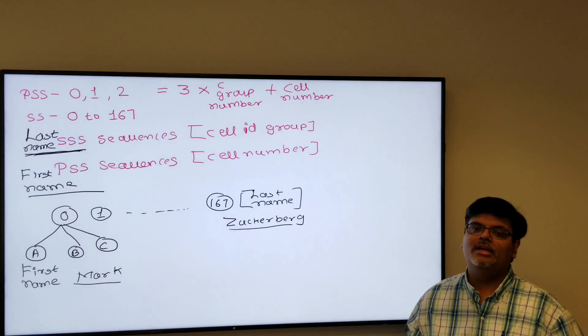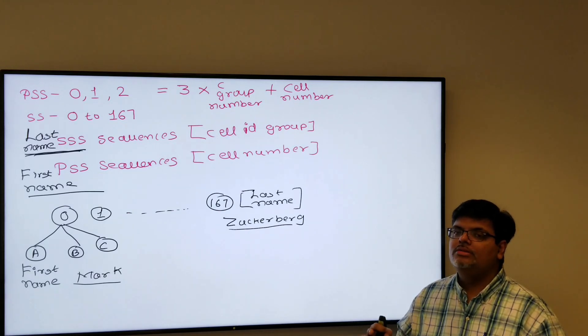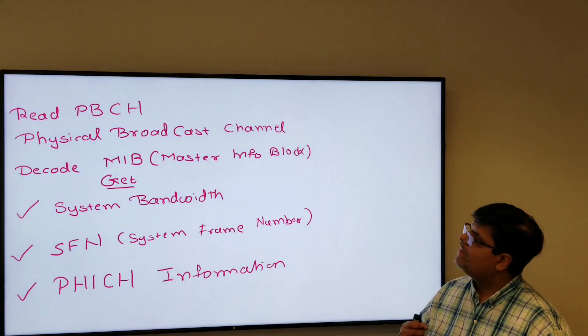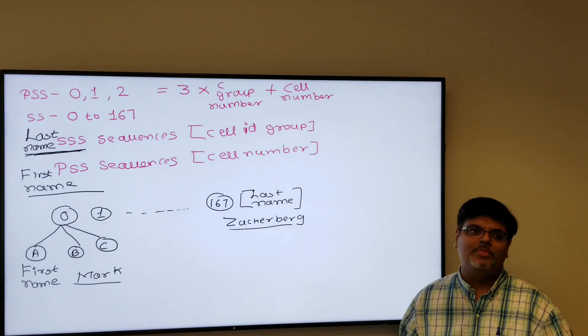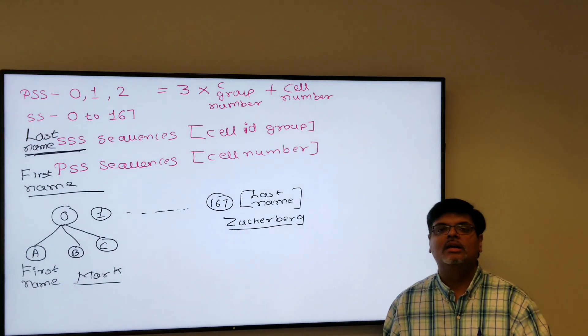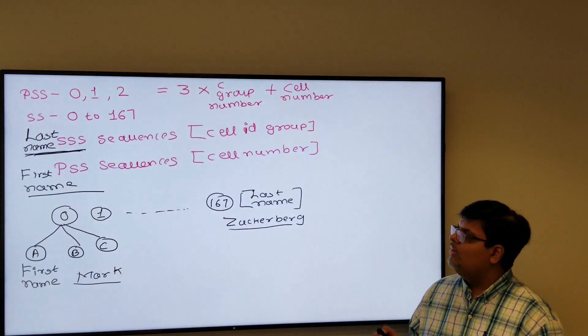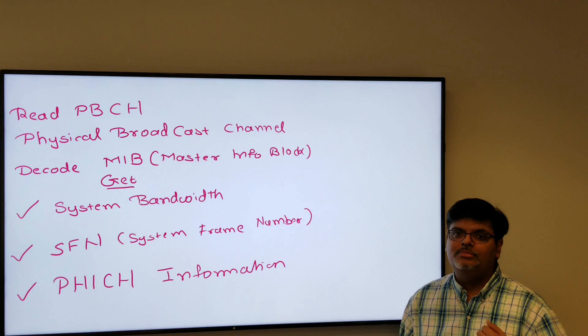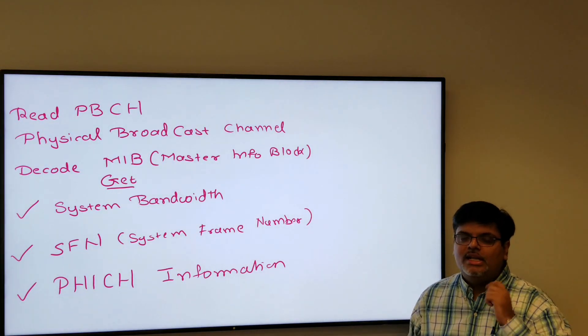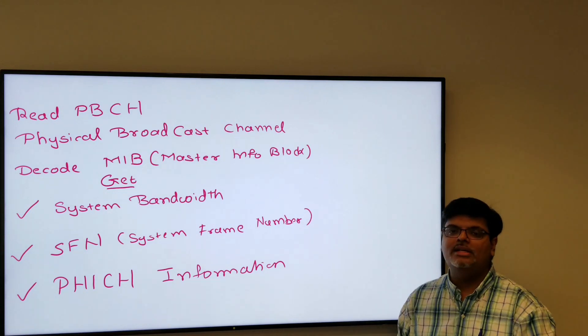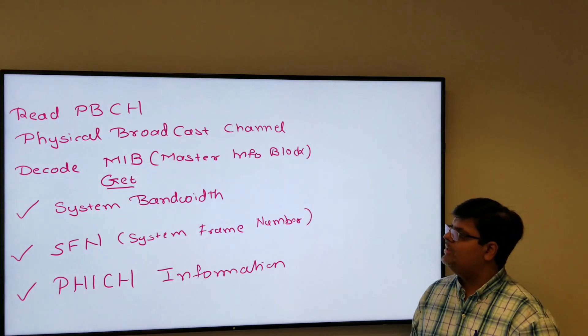Now after synchronization, it has PSS and SSS, it is slot synchronized and time synchronized. Now we have to see the frame synchronization, how does it get the frame number. So after reading the PSS and SSS, your signaling is over, it goes and reads the physical channel which is physical broadcast channel. From there it gets the master information block.